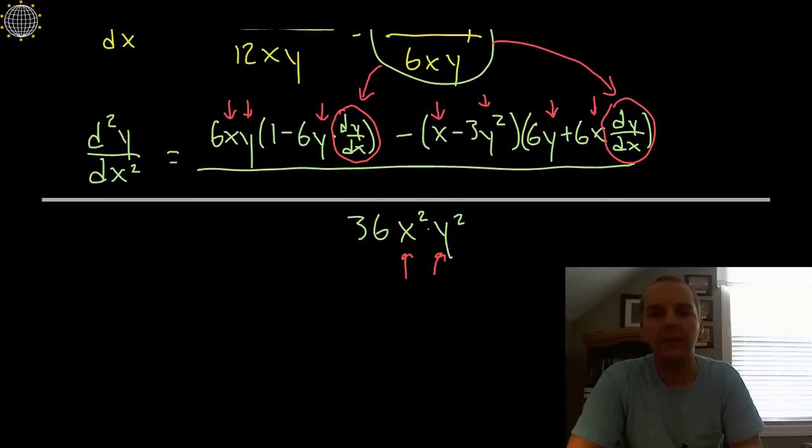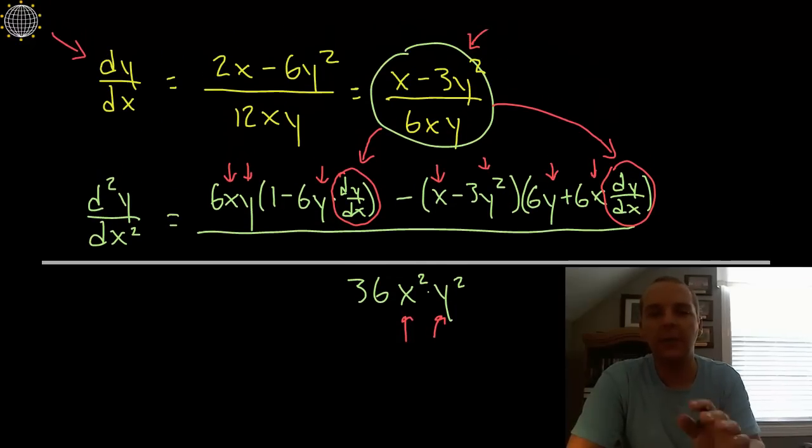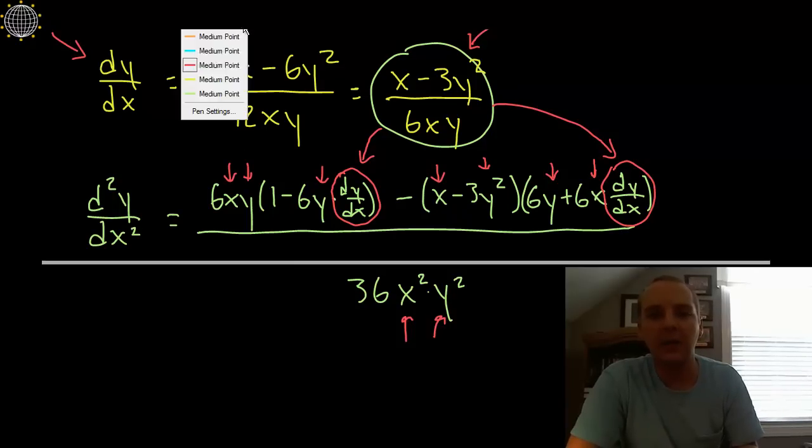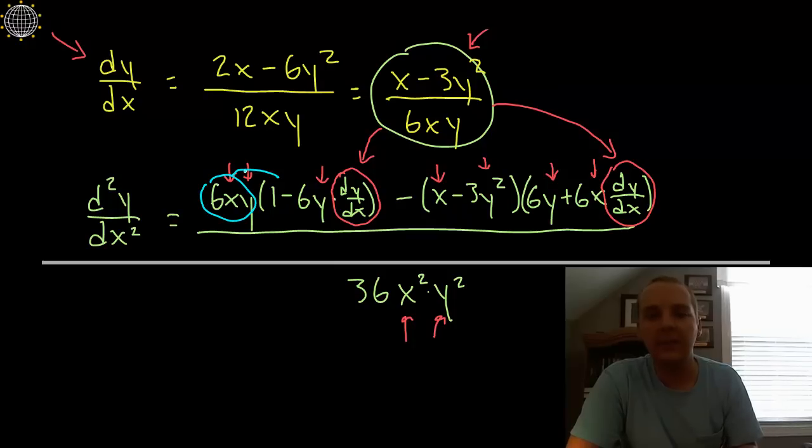I think I'll probably leave the algebra for you guys here. I think I'll probably stop with this example, but a couple things I automatically see is you have a 6xy here and as it distributes through this binomial it will cancel with this 6xy, so the algebra probably won't be quite as bad as you're anticipating, but it will probably take 10-15 minutes for me to chug through all that algebra.